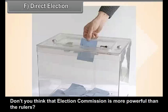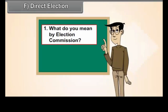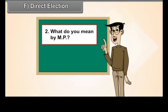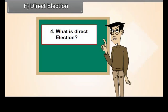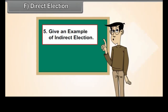Don't you think that the Election Commission is more powerful than the rulers? Review questions: First, what do you mean by Election Commission? Second, what do you mean by MP? Third, what do you mean by MLA? Fourth, what is direct election? Fifth, give an example of indirect election.